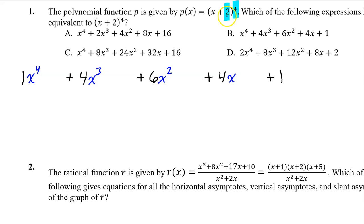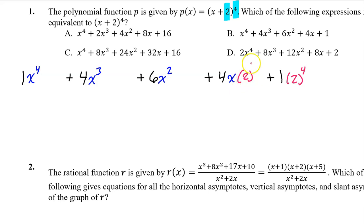The second term of the binomial allows you to fill in factors from right to left, beginning with 2 to the fourth power. Then the next term over will have a factor of 2 to the third power, then 2 squared, then 2 to the 1st power, then 2 to the 0 power, which you don't need to write.